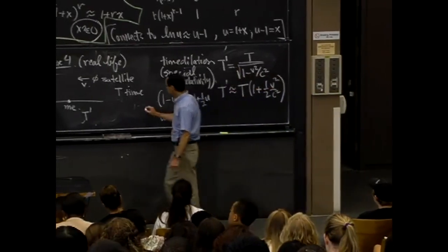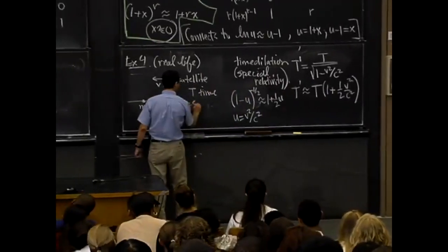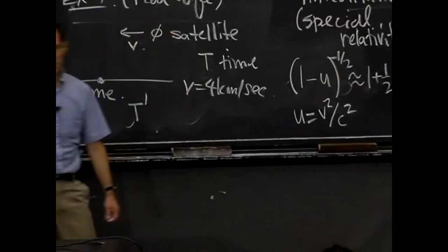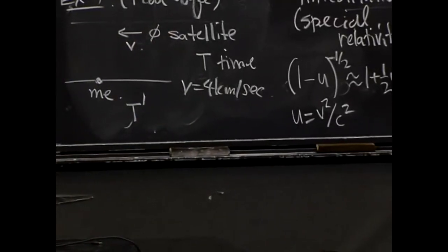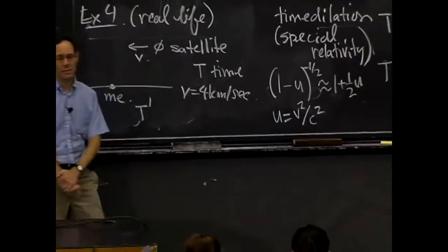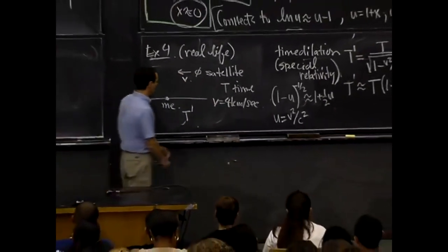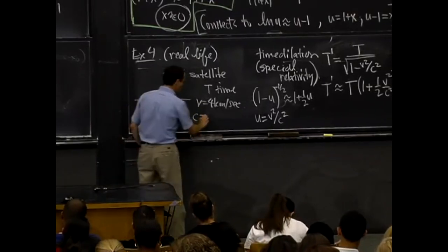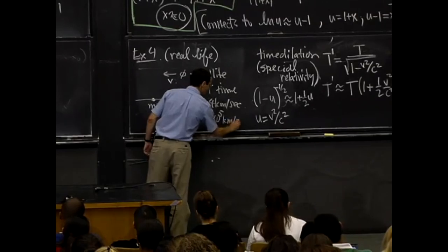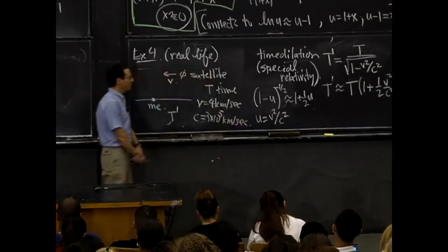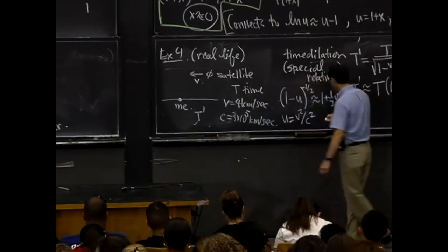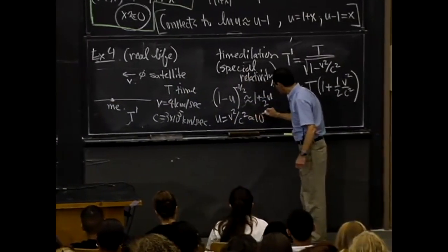So in this case, what actually happens is that v is about 4 km per second. That's how fast the GPS satellites actually go. In fact, they had to decide to put them at a certain altitude, and they could have tweaked this if they had put them at different places. Anyway, the speed of light is 3 times 10 to the fifth kilometers per second. So this number, v squared over c squared, is approximately 10 to the minus tenth.